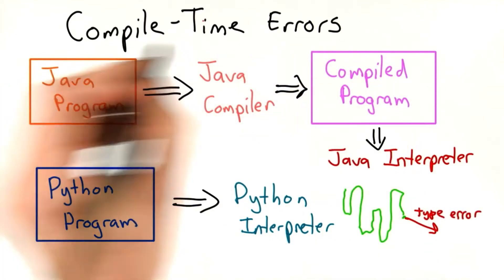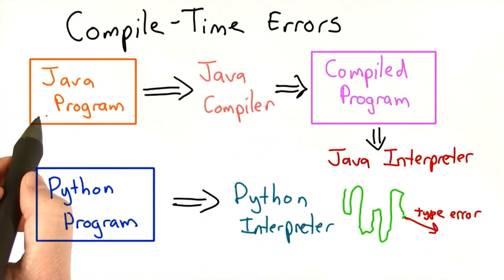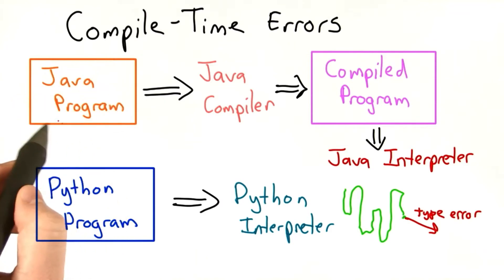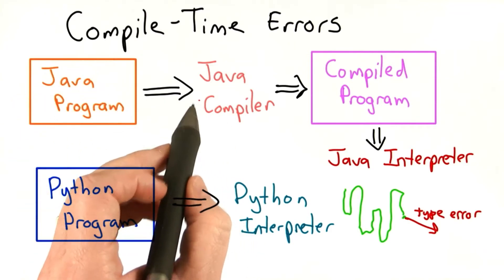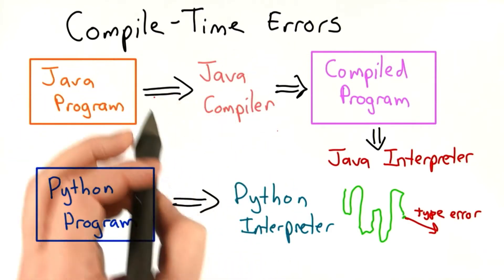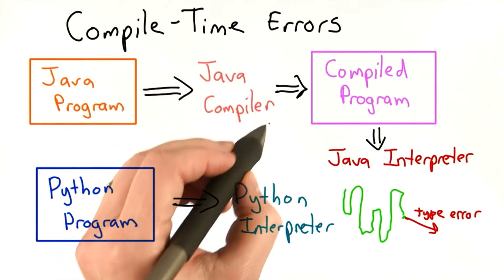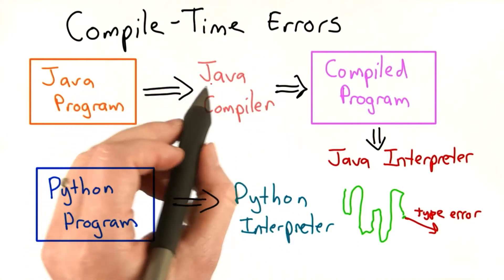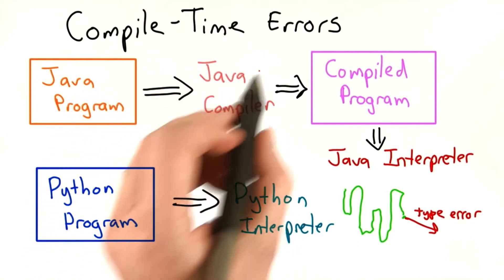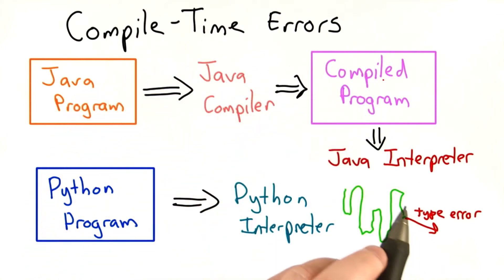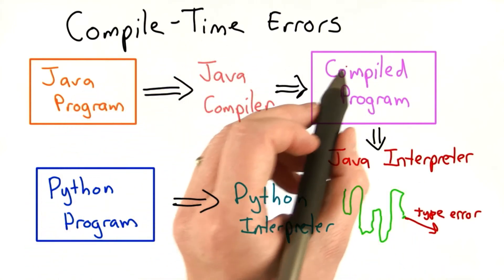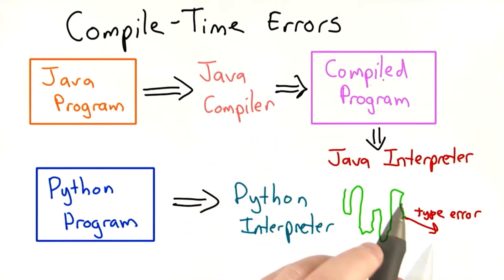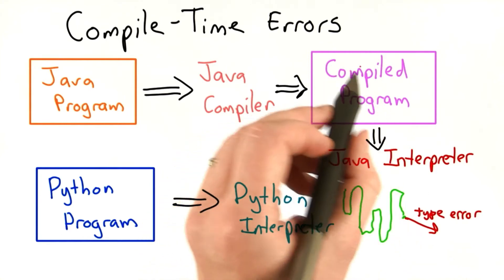With a statically typed language like Java, things are quite different. You write a Java program, and instead of running that right away, you feed it into what's called a compiler. This is the program that takes the Java program and produces a compiled program — in the case of Java, that's called Java bytecodes, though it's called different things for different languages.